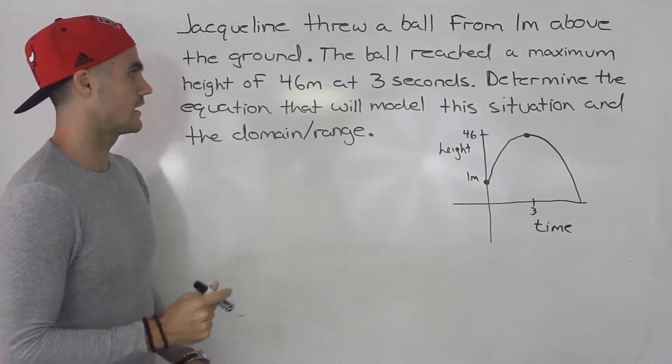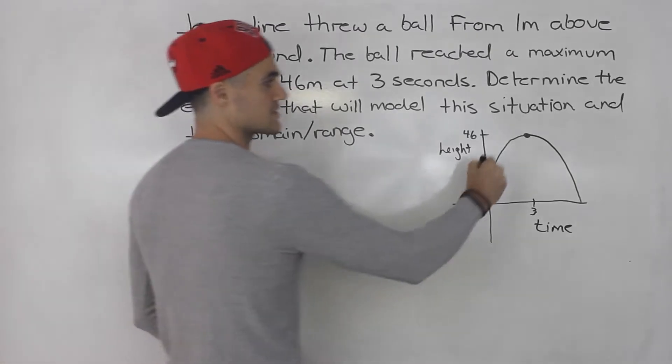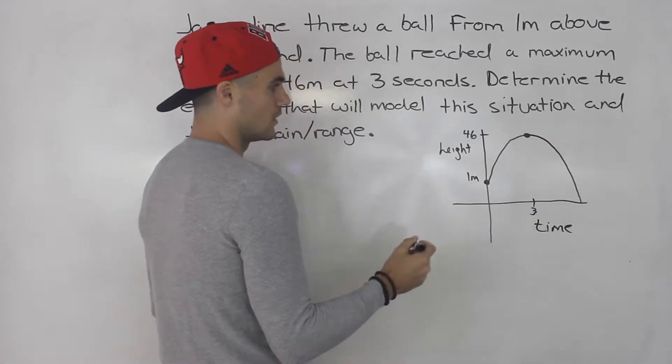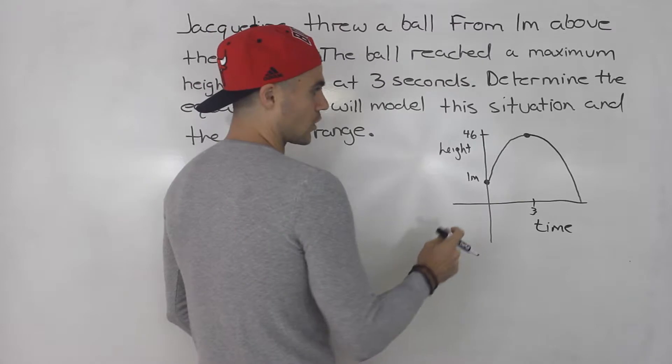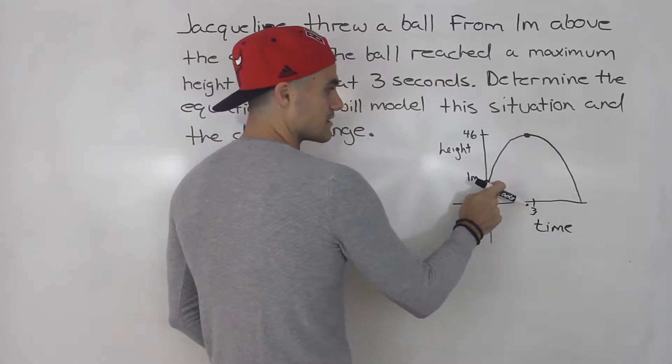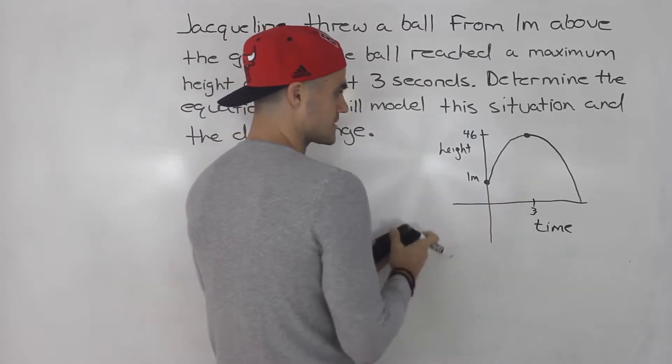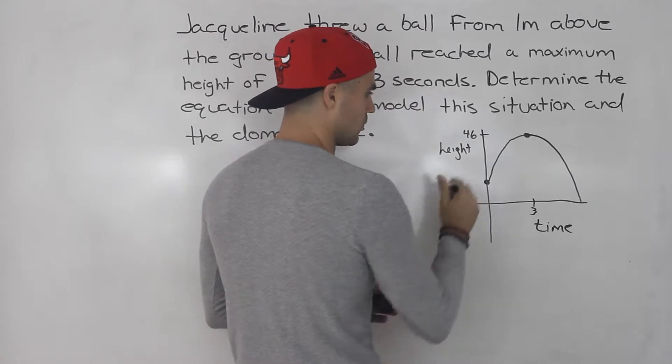And they're asking you to find an equation that's going to model this. So notice this is just a parabola here. What are the coordinates of these two points that we labeled? Well, this coordinate here is 0 and 1.